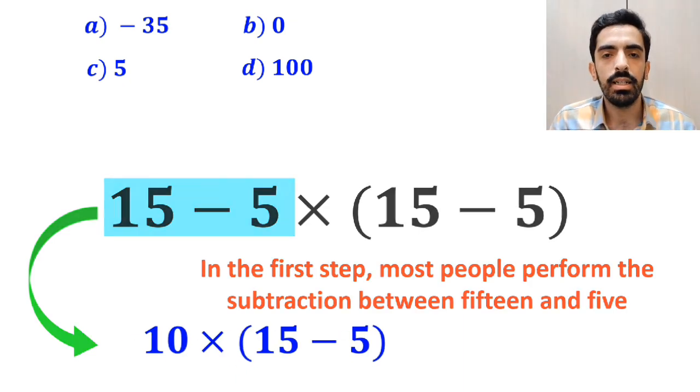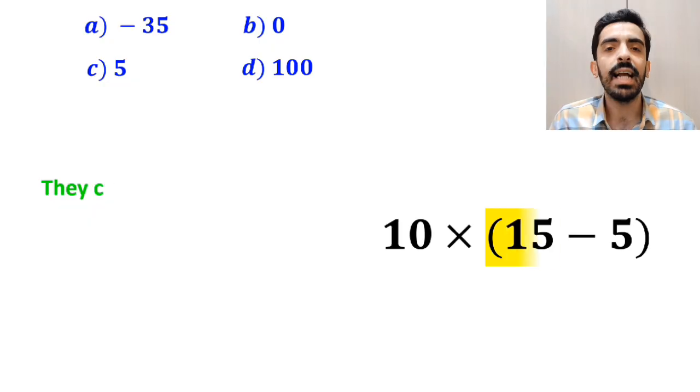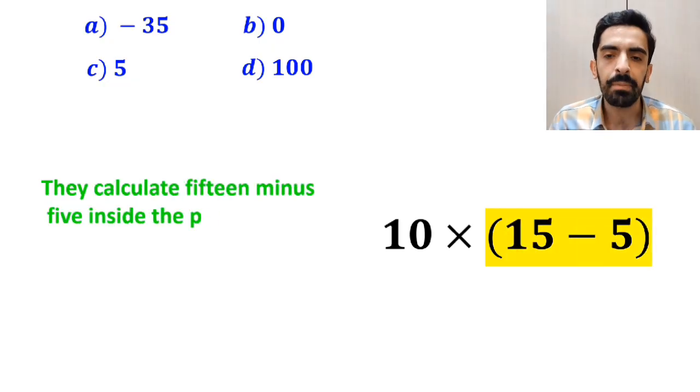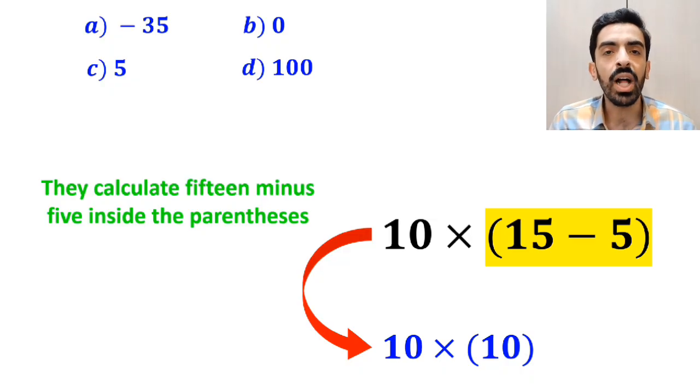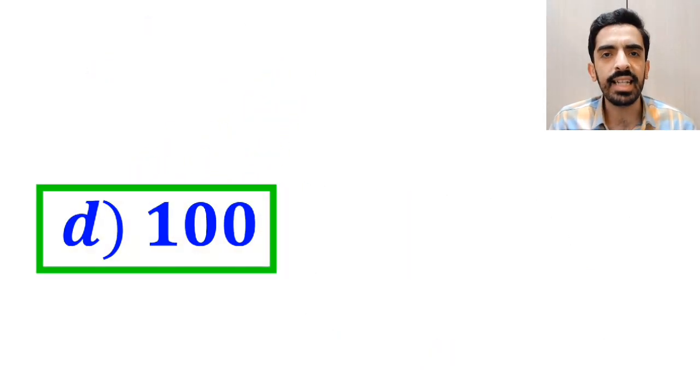In the next step they calculate 15 minus 5 inside the parenthesis which becomes 10 multiplied by 10. And finally the value of this expression must be equal to 100. Then without any hesitation they quickly say that option d is the correct answer to this question.